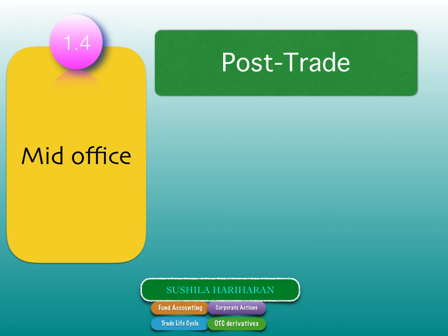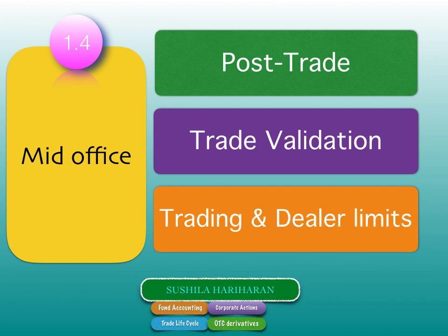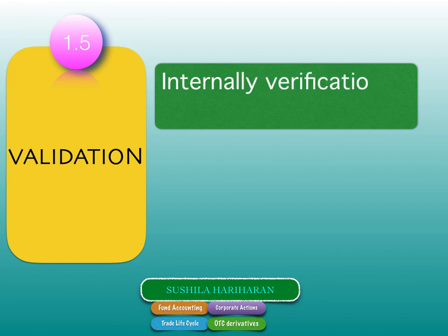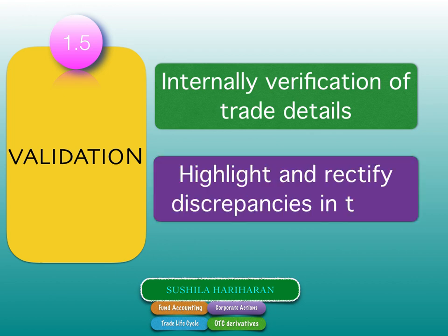The middle office also oversees post-trade activities, which include trade validation and ensuring trading and dealer limits are in place. Trade validation is the internal verification of trade details — many things can go wrong. These details could highlight and rectify discrepancies in the trade, such as incorrect data capture or mismatched trade information.